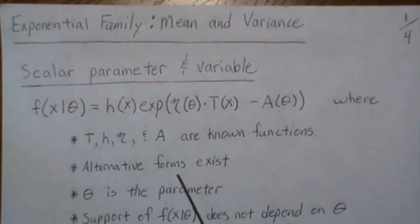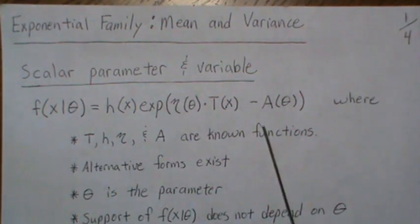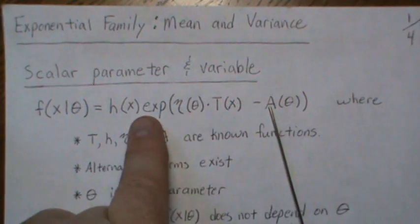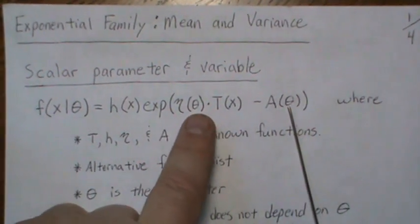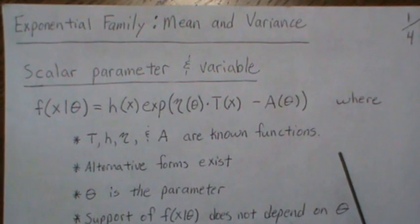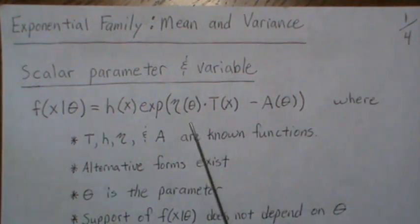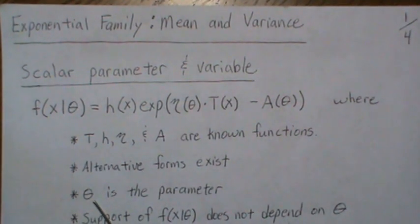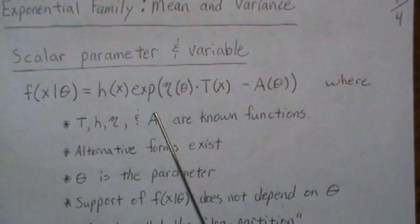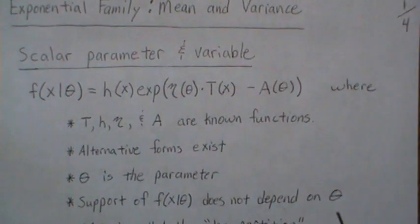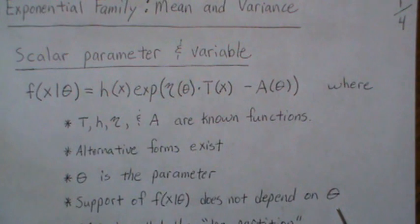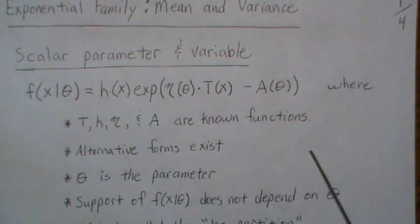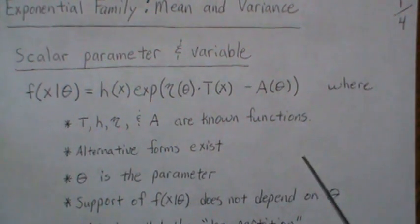It should be noted that different forms exist. Since this is e raised to this power, you can take the product of exponentials and combine them into a function of theta. We're going to specifically look at this form. The support of the distribution doesn't depend upon the parameter, so continuous distributions that depend on the parameter don't fit into this exponential family.